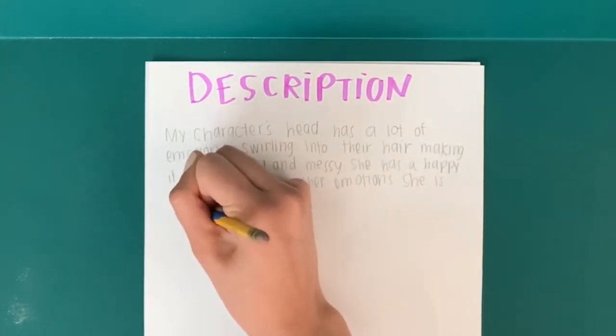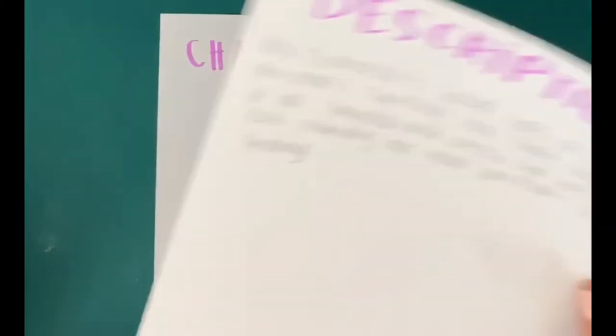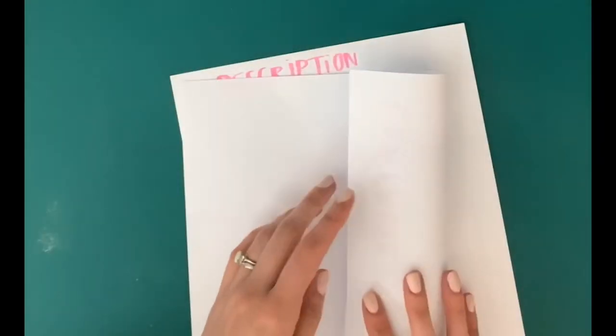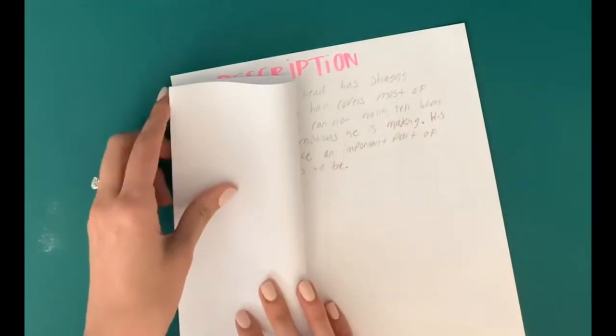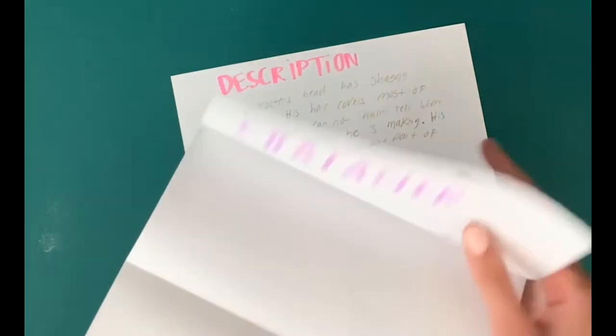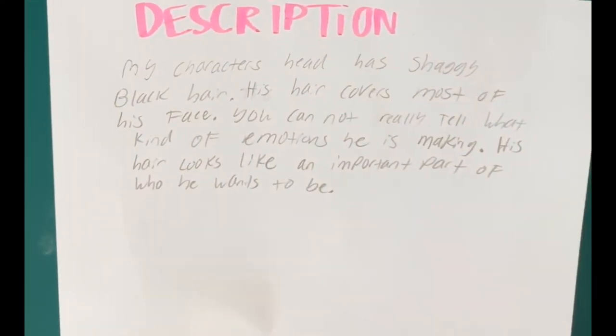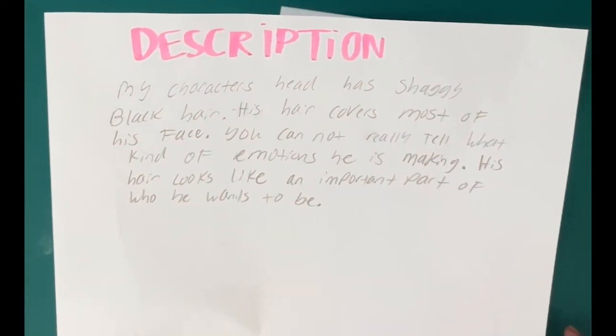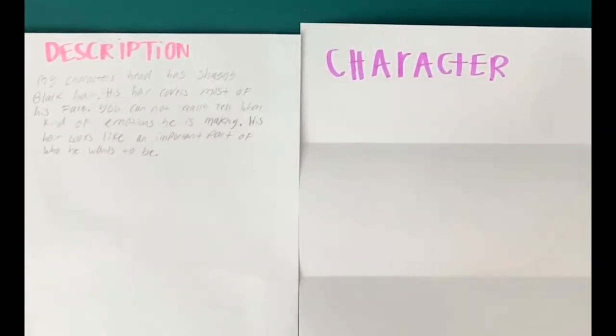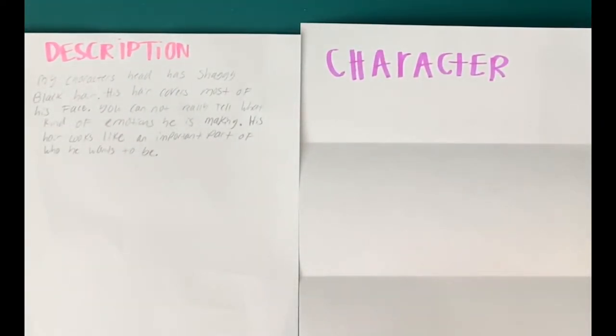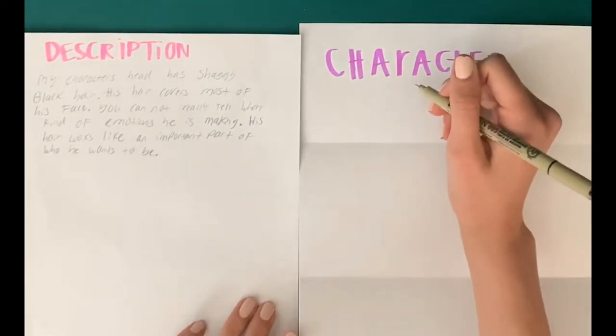Once you get the paper from the person next to you, go ahead and read your partner's description quietly to yourself. Now let's take our second sheet of paper — our character page — and fold it into three sections. Now that you've folded your character page, use the description page you received from your neighbor and draw the face of the described character in the top third of the paper.